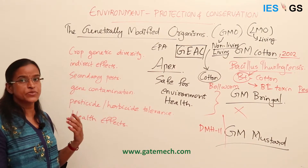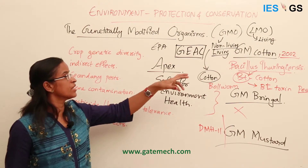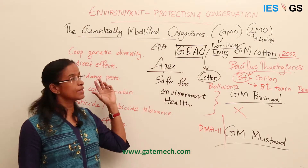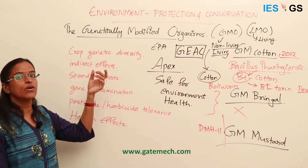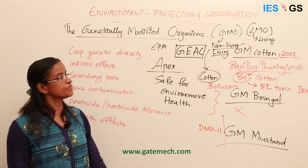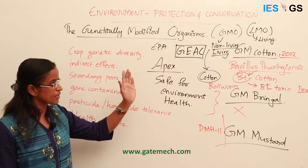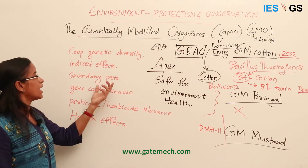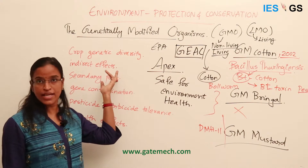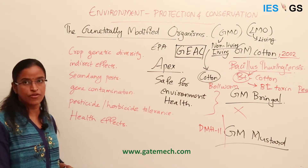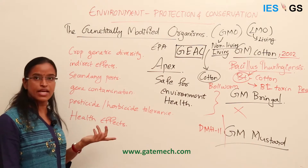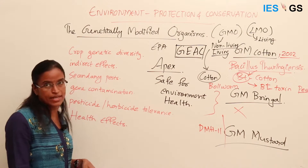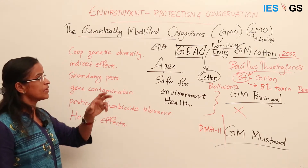There are also indirect effects: other animals that feed on the insects being controlled — such as birds or butterflies feeding on certain pests like the bollworm — will have their populations affected. Additionally, there is increased attack from secondary pests. When we control one particular strain of pest, other pests can come and attack the plants, which can prove very disastrous.